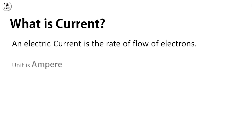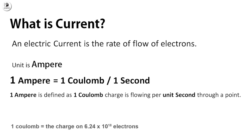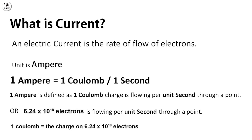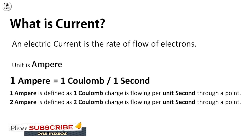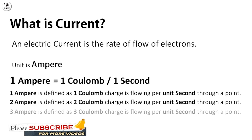As I said earlier, current is the rate of flow of electrons and its unit is ampere. Here, 1 ampere means 1 coulomb of charge is flowing per second. We discussed earlier that 1 coulomb is equal to the charge on 6.24 × 10^18 electrons. So, 1 ampere equals 6.24 × 10^18 electrons flowing through a certain point per second, or 1 coulomb of charge per second. 2 ampere means 2 coulombs of charge flowing through a certain point per second. Likewise, 3 ampere means 3 coulombs of charge per second.